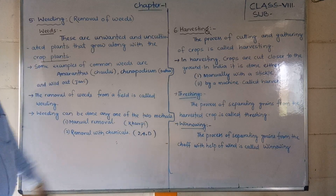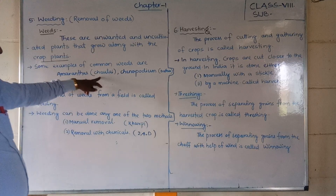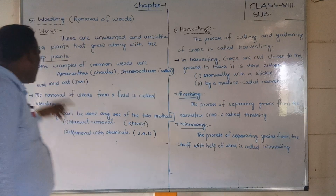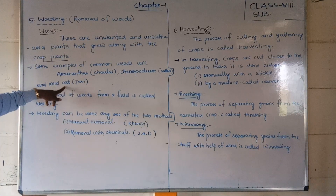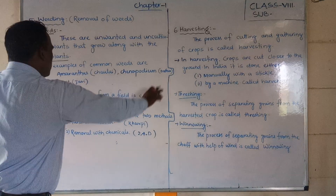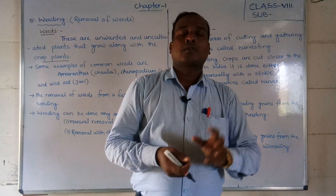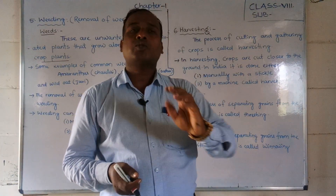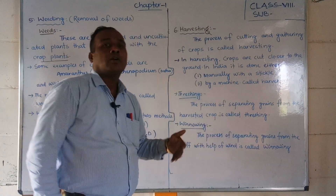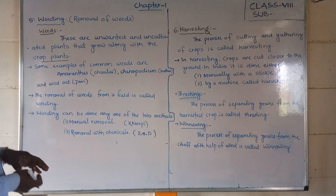Some examples of common weeds are: Amaranthus, which is called chowli; Chenopodium, which is called bathwa; and wild oats, which is called javi. These are some common weeds which we generally find in agricultural fields along with paddy, maize, wheat, or other crops.